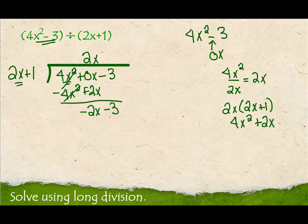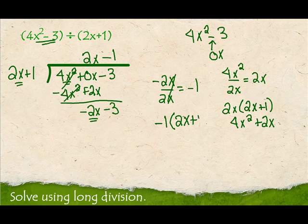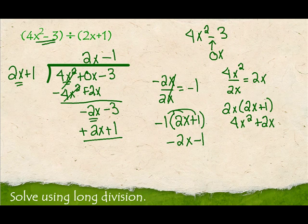I look at my first term, negative 2x, and divide by 2x. Negative 2 divided by 2 is negative 1, and x divided by x cancels. So I put minus 1 up here. Now I distribute negative 1 through 2x plus 1 — negative 1 times 2x plus 1 gives negative 2x minus 1. That goes underneath. Then I change my signs and add down: negative 2x plus 2x cancels to 0, and negative 3 plus 1 is negative 2.